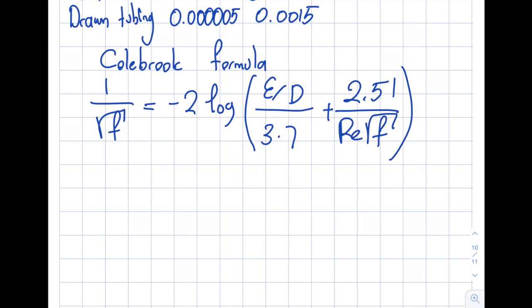1 over square root of f equals minus 2 log of epsilon over D divided by 3.7 plus 2.51 divided by Reynolds number times the square root of the f value. So as you can see, fairly complicated equation I'm not gonna lie. And one other difficulty in here is you see there's a square root of f and there's a square root of f within this log, so it's fairly hard to compute this from the mathematics standpoint.